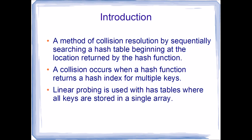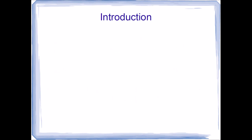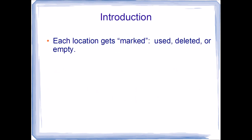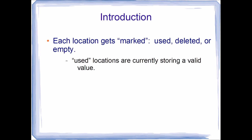Linear probing is used with hash tables where all keys are stored in a single array. Each location within the hash table, in addition to storing its key, gets marked. We could name these marks used, deleted, or empty.